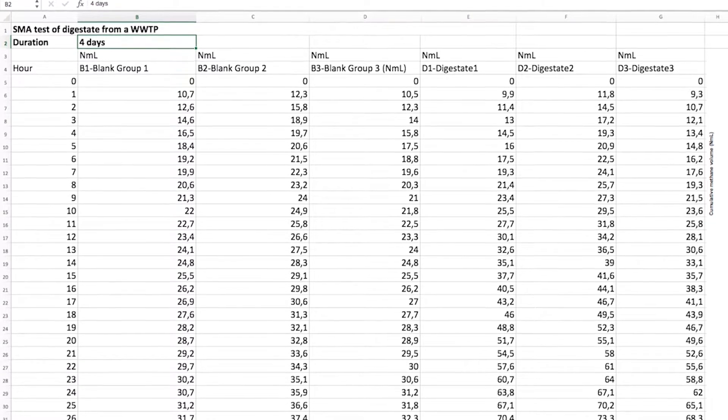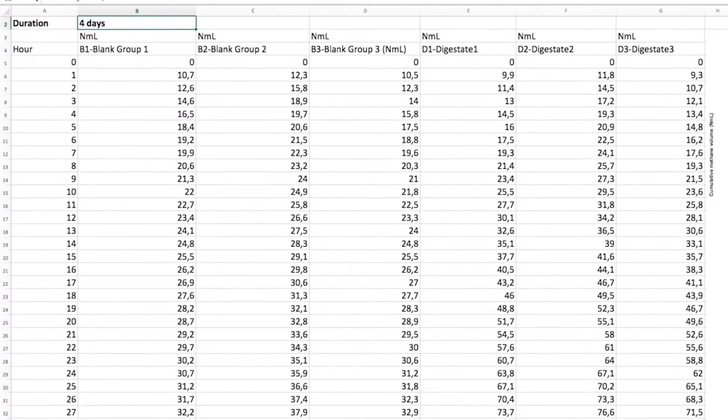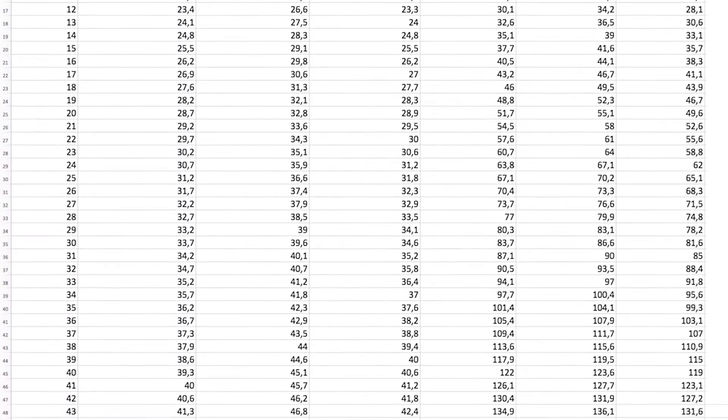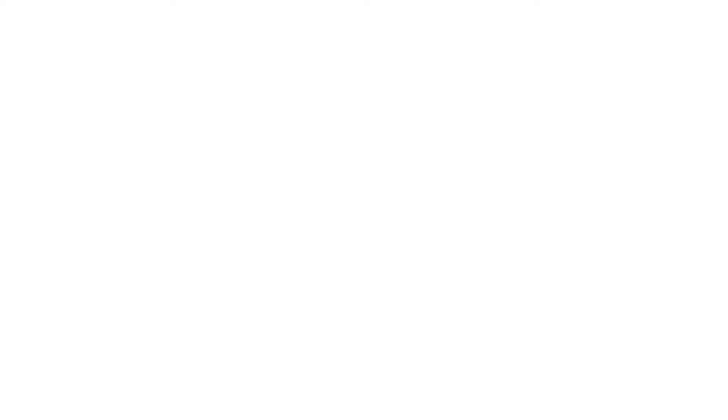After the test has been running for a few days, stop the program when the gas production stabilizes. Download the data from the program. To calculate the SMA of the sludge, use the data to draw the required graphics and carry out further data processing.